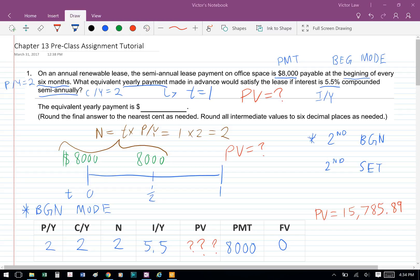And when you plug into the financial calculator, you'll get a present value of $15,785.89, and that is question 1.